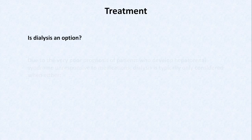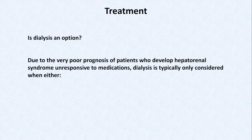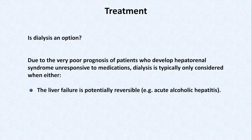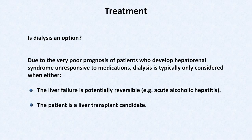Regarding dialysis for patients who don't respond to albumin and vasoconstrictors: due to the very poor prognosis of patients with hepatorenal syndrome unresponsive to medications, dialysis is typically only considered when either the liver failure is potentially reversible — as in acute alcoholic hepatitis — or the patient is a liver transplant candidate. That concludes this video on the hepatorenal syndrome. Related videos on hepatic encephalopathy, spontaneous bacterial peritonitis, and esophageal varices are also available.